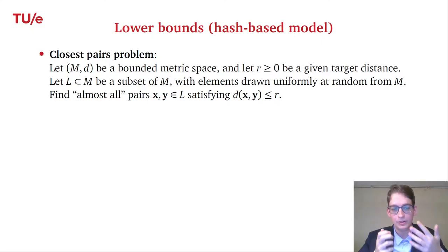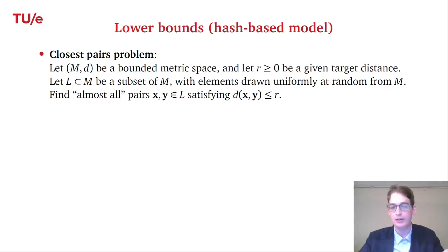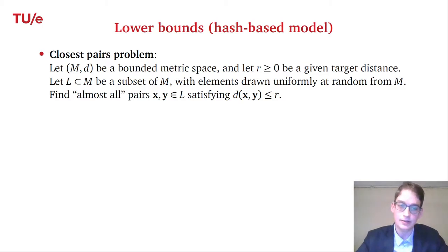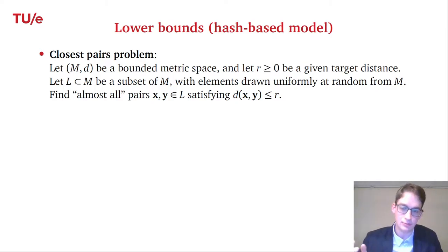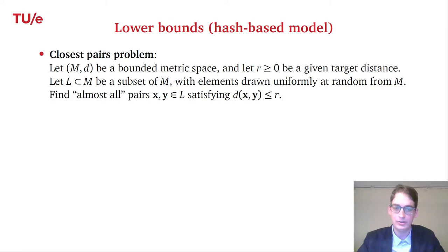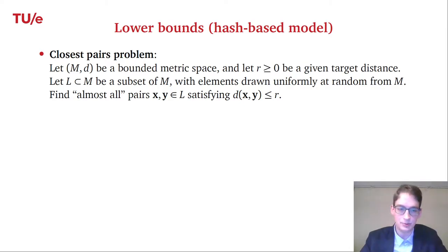The problem asks to find almost all pairs x, y in L such that the distance d(x,y) is at most r. 'Almost all' means you can miss a constant fraction — for instance, finding 90% or 95% of such pairs is already quite good.